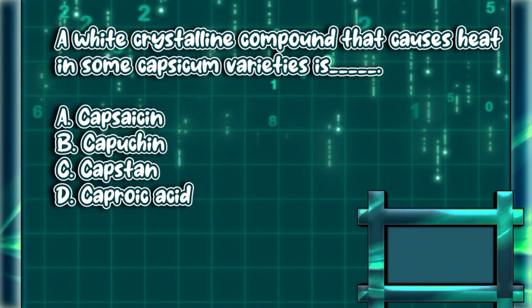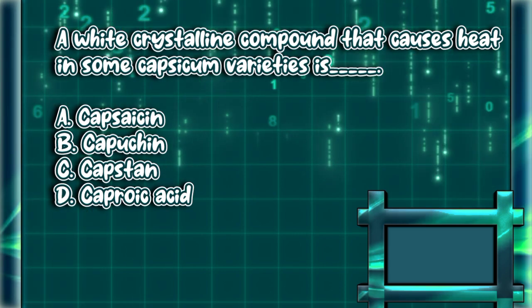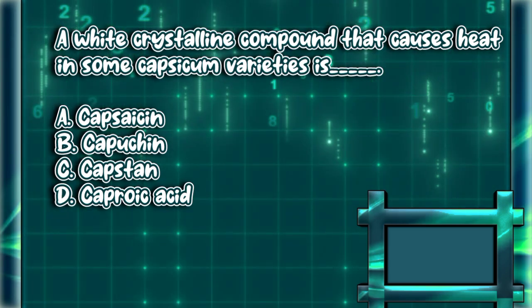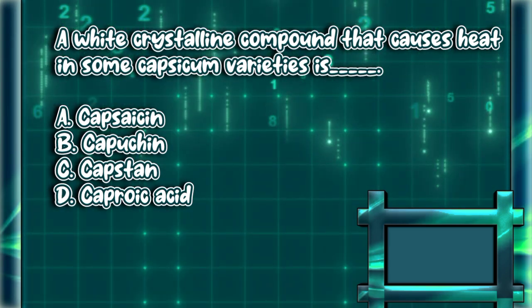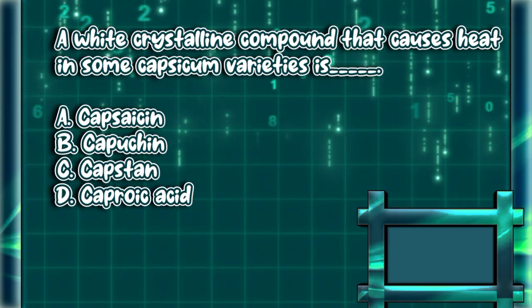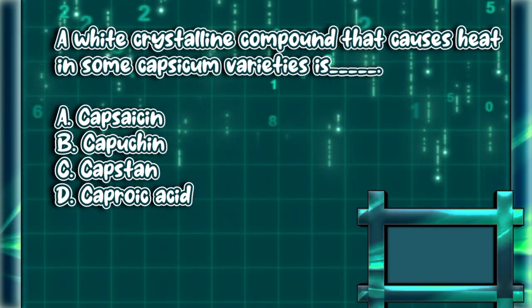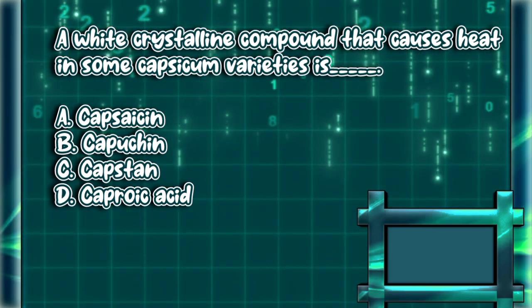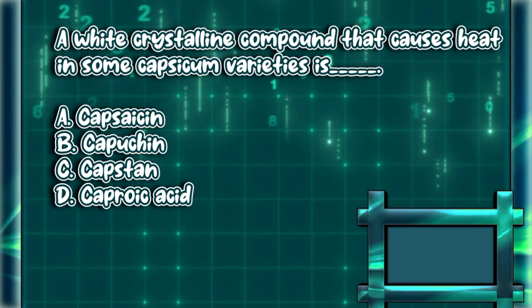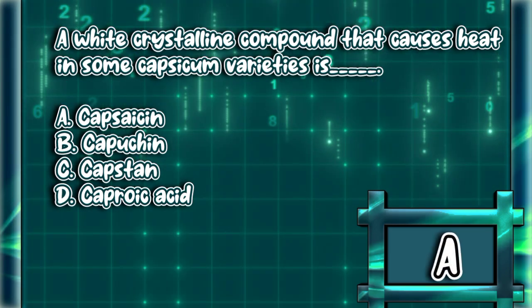A white crystalline compound that causes heat in some capsicum varieties is: a) capsaicin, b) caputian, c) capstan, d) caproic acid. The answer is letter A.